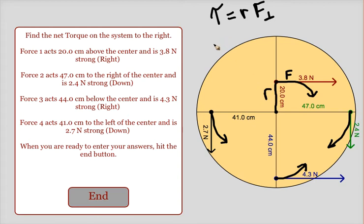So we would find all four torques, take the clockwise torques, subtract the counterclockwise torques, or vice versa, to find our net torque.